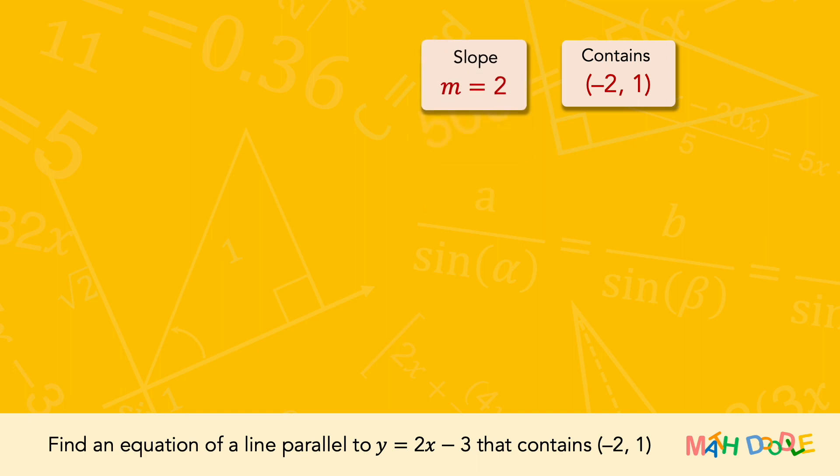Since we now know the slope of the line, let's use the slope-intercept form to find the equation of the line. In the slope-intercept form, m in front of x represents the slope, and b represents the y-intercept.